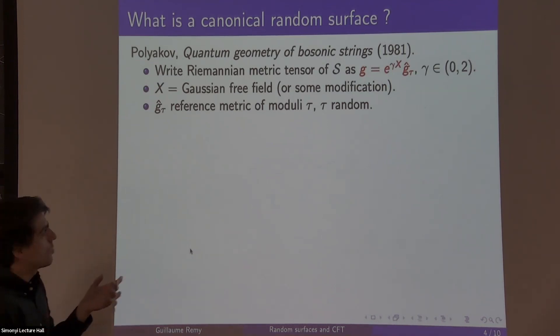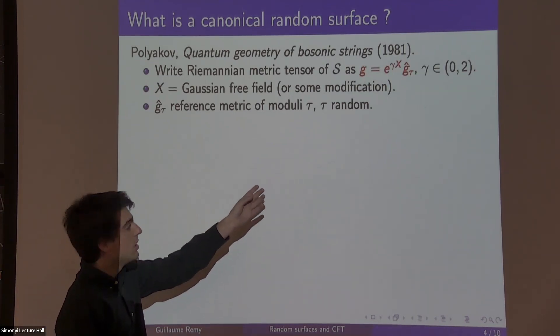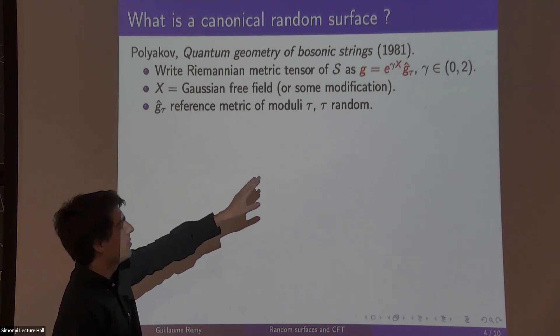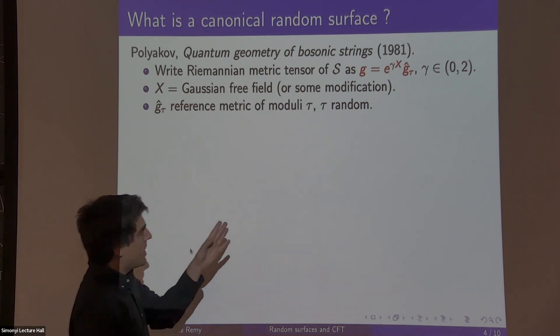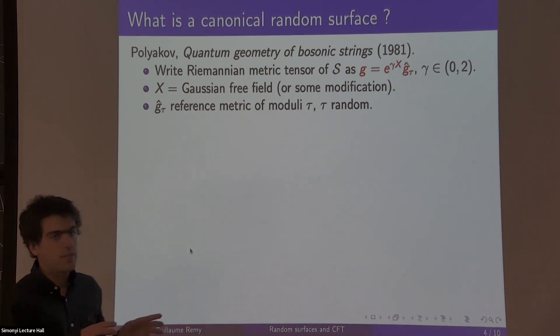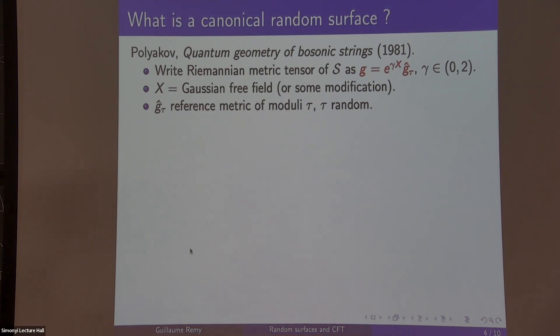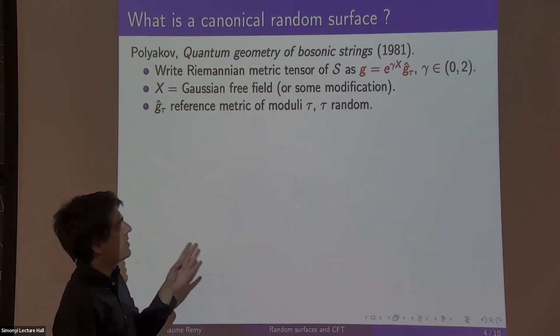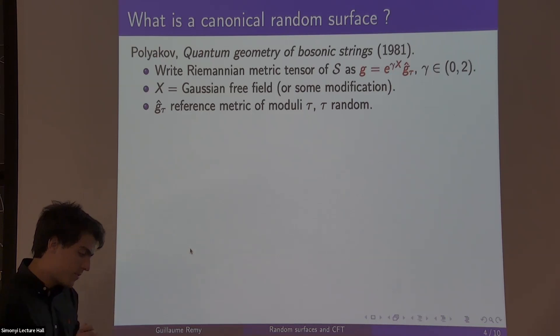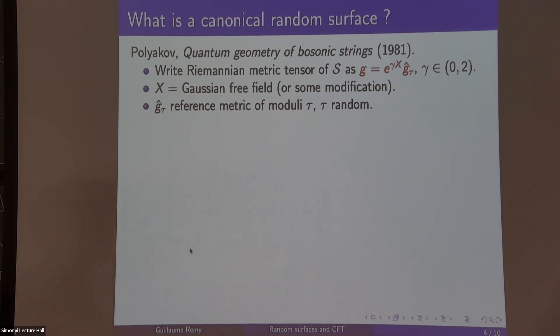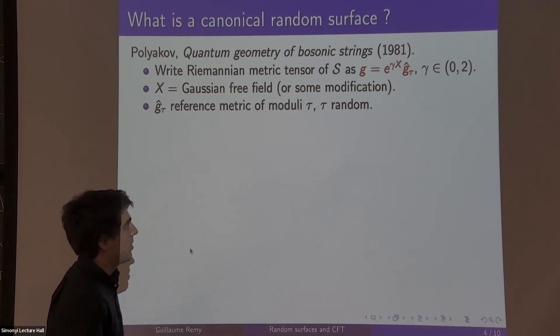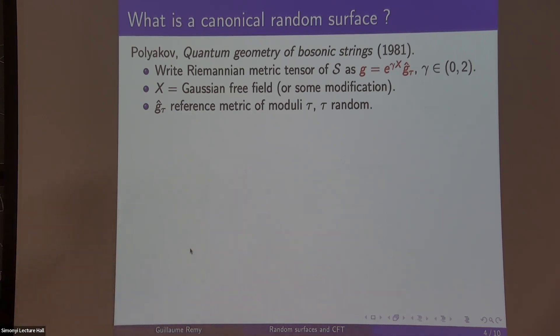You take any metric tensor g, you can write it into this form of a conformal factor, which is just a positive function. You write it as e to the gamma x. And then g hat of tau is a fixed reference metric. That depends on your moduli parameter tau.